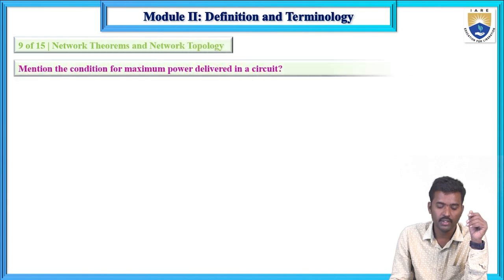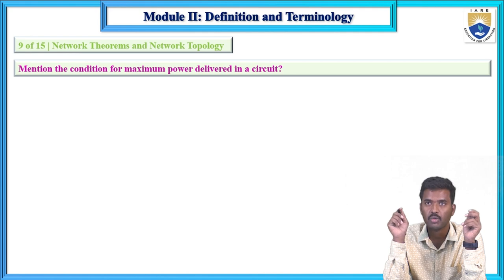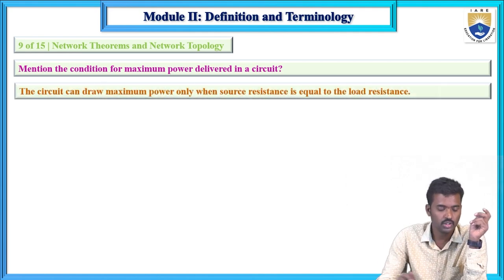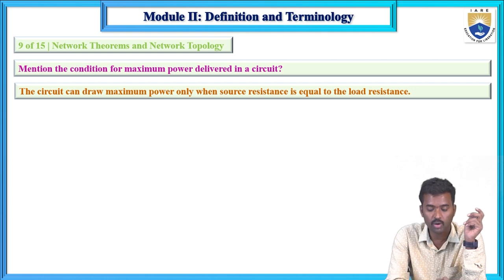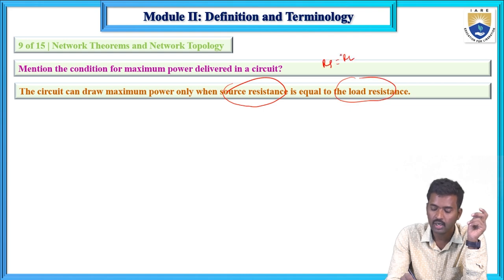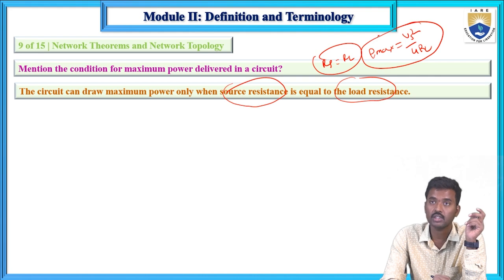Ninth question: mention the condition for maximum power delivered to the load. The condition is when load resistance equals source resistance — RS = RL. At this condition, maximum power is transferred to the load, and that maximum power equals VS² / 4RL.